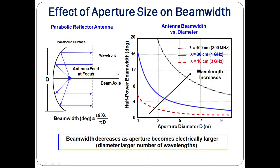The effect of aperture size on beam width: gain and effective aperture are inversely proportional to beam width. As the aperture becomes electrically larger, the beam width decreases. A plot of aperture diameter versus half power beam width confirms that as the aperture diameter increases, the half power beam width decreases accordingly.